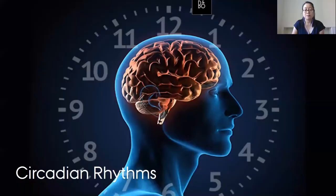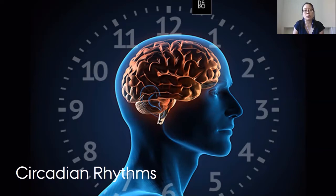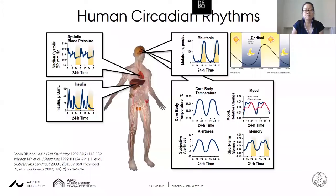Due to the rotation of the earth, we have predictable changes in the light and temperature of our natural environment, and as a result we have evolved circadian clocks. 'Circa' in Latin means 'about' and 'dia' means 'day' — they are approximately 24-hour cycles of our behavior and physiology that enable our bodies to adjust to predictable daily environmental changes. In humans, there are predictable cycles in behavior, physiology, and biochemistry, and importantly they are endogenous, meaning intrinsically rhythmic.